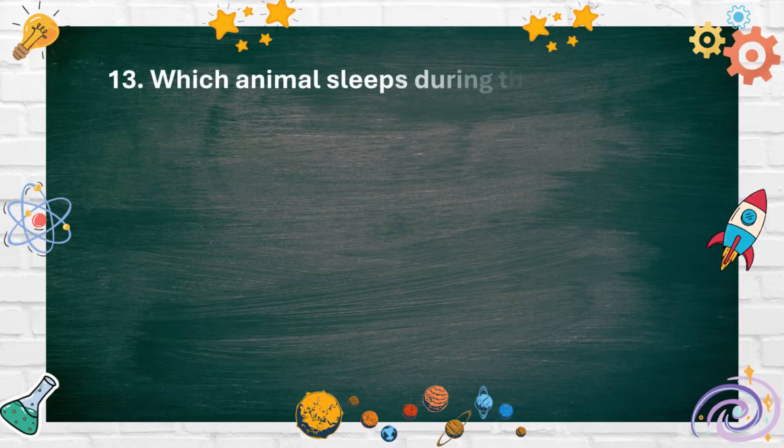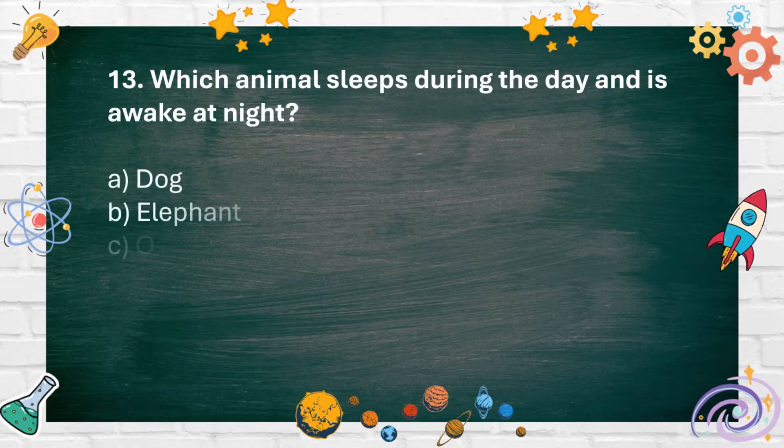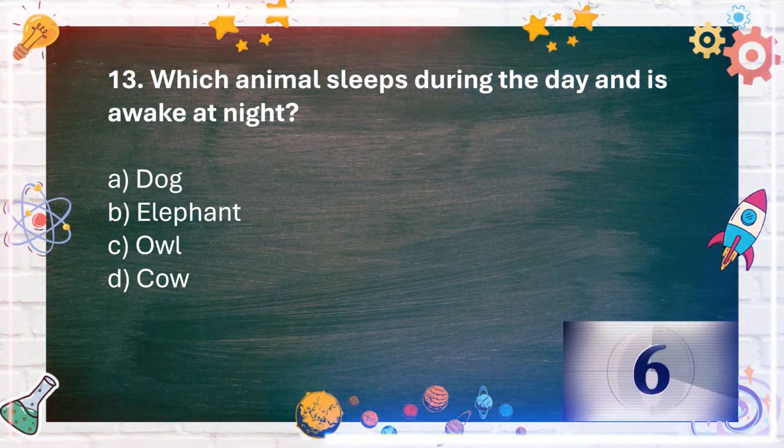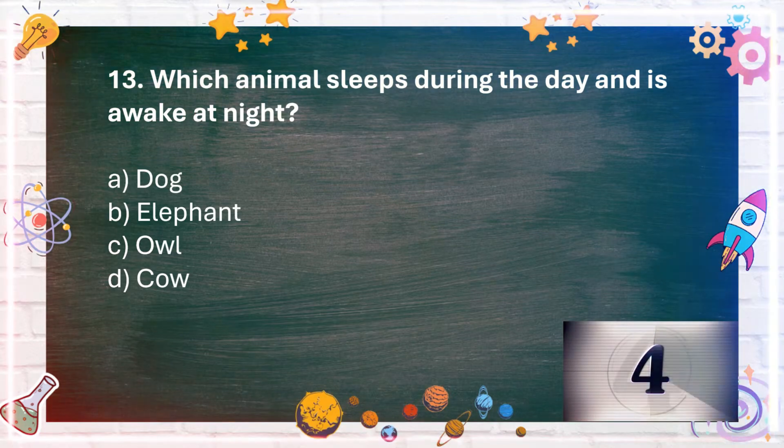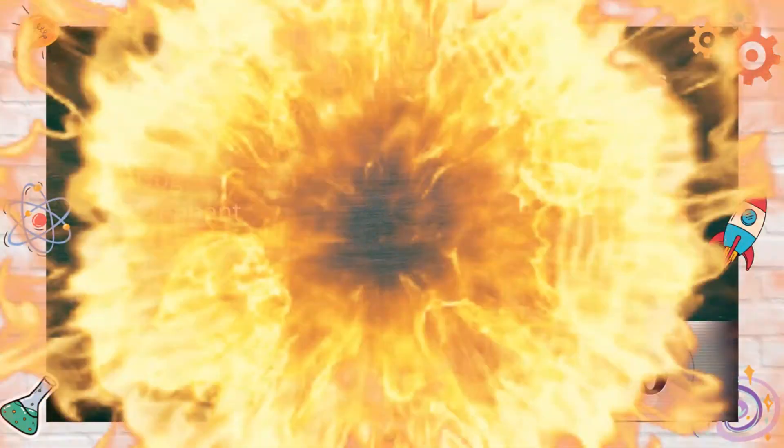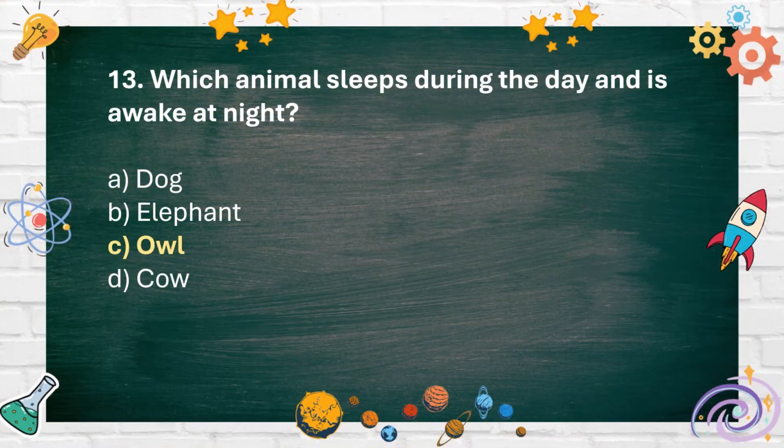Number 13. Which animal sleeps during the day and is awake at night? A. A dog B. Elephant C. Owl D. Cow. The answer is C. Owl.